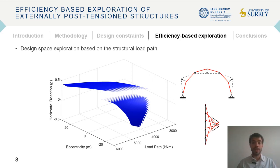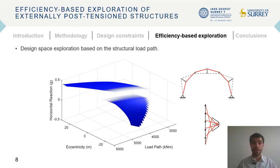Passing on to the efficiency-based exploration, to be able to compare the performance of different structural configurations, the first approach adopted in this work is based on the structural load path, which can be easily evaluated using the graphic statics construction. The structural load path has been used to evaluate the variation of performance with the eccentricity of the post-tensioning system and the value of the horizontal reaction when a certain configuration of the struts is chosen — in this case, the orientation that allows obtaining a constant tension force. The results show that the minimum values of the structural load path are obtained when the post-tensioning system intersects the compression chord, as shown on the figure.